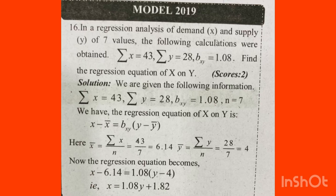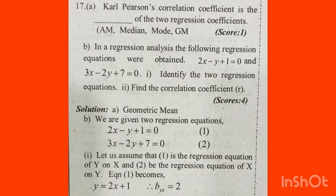We know the details. We have to do the regression line. If you use x minus x-bar, you have to answer y minus y-bar. Karl Pearson's correlation coefficient is the geometric mean of the two regression coefficients.